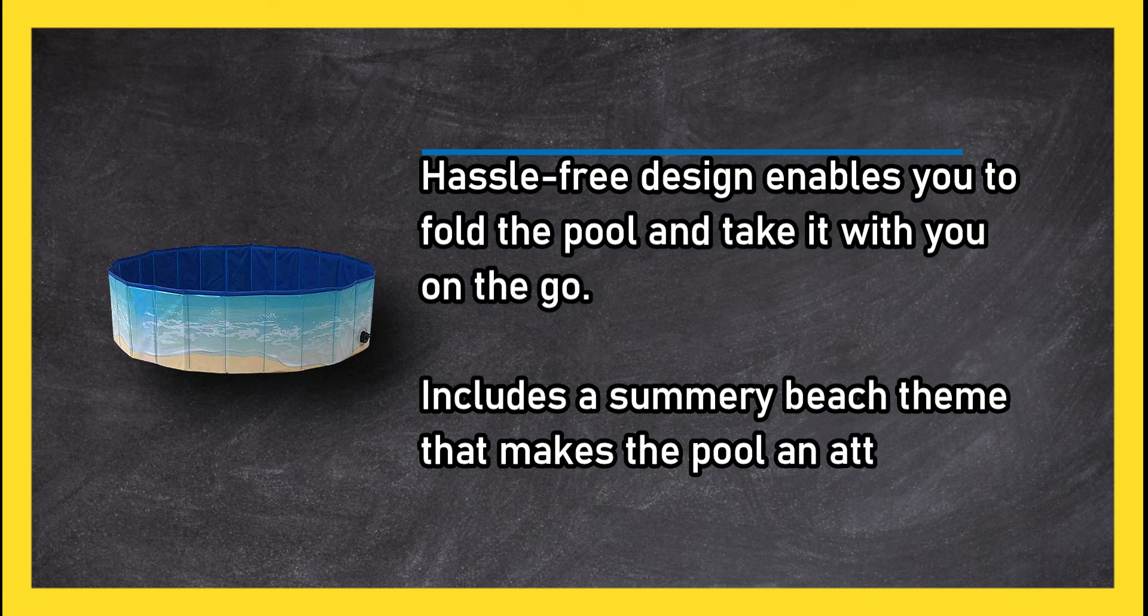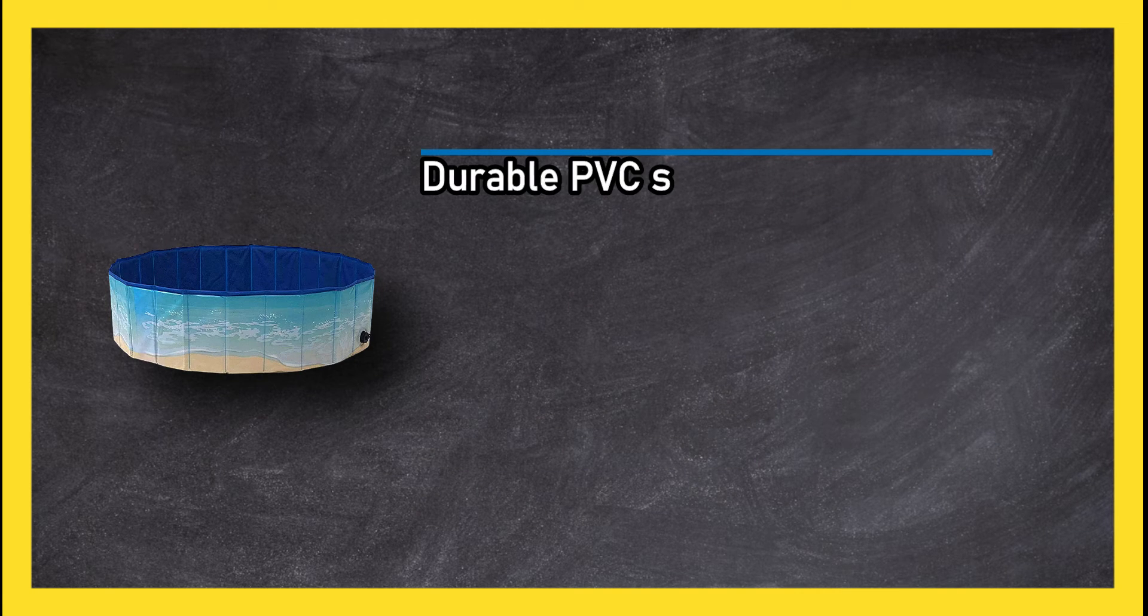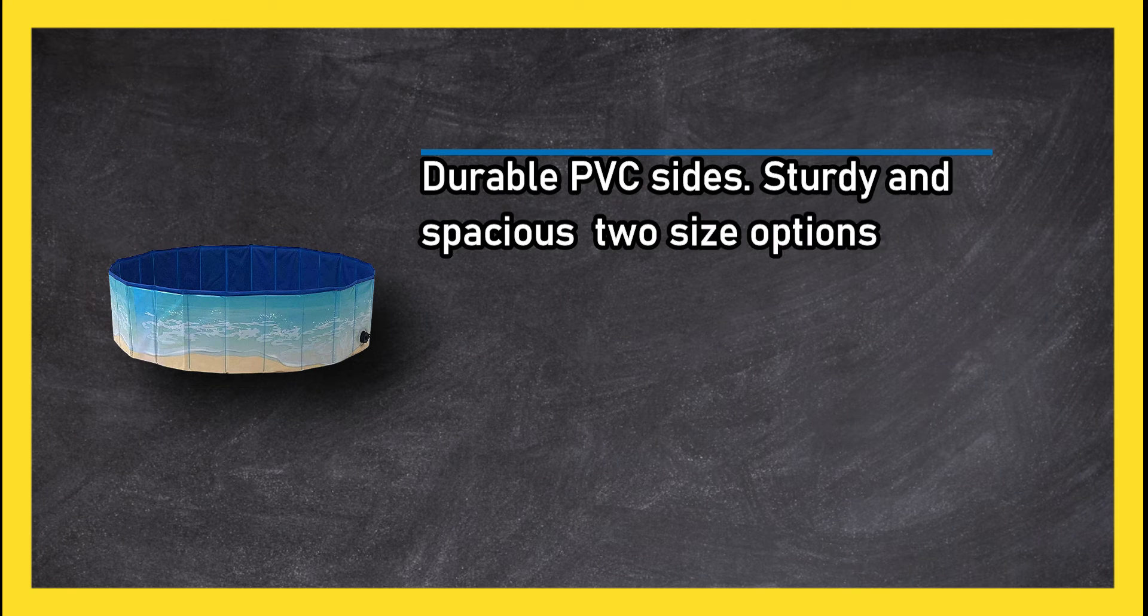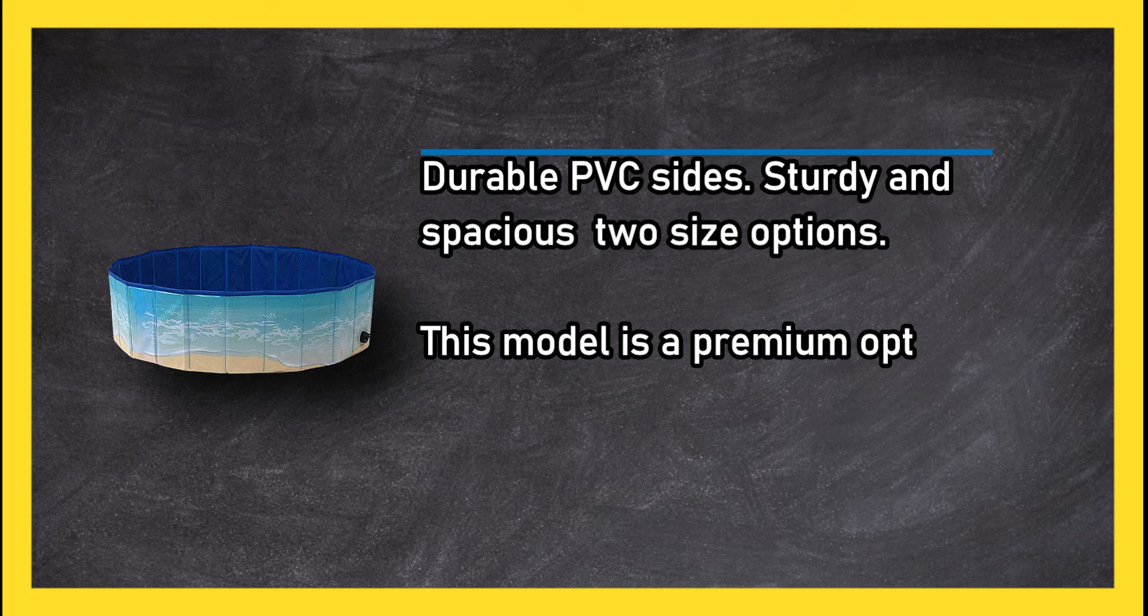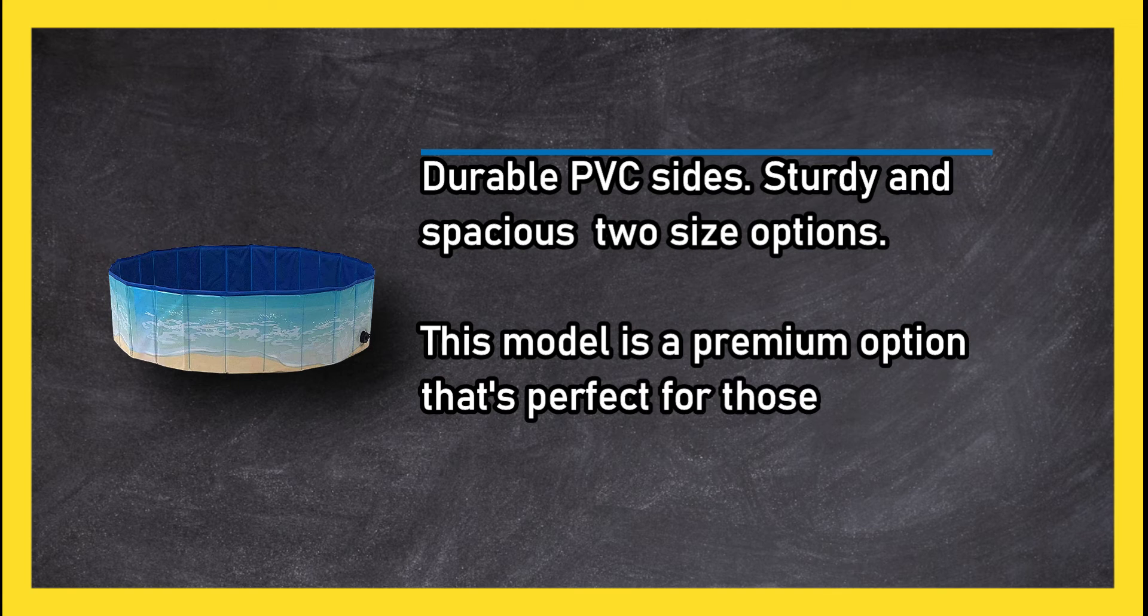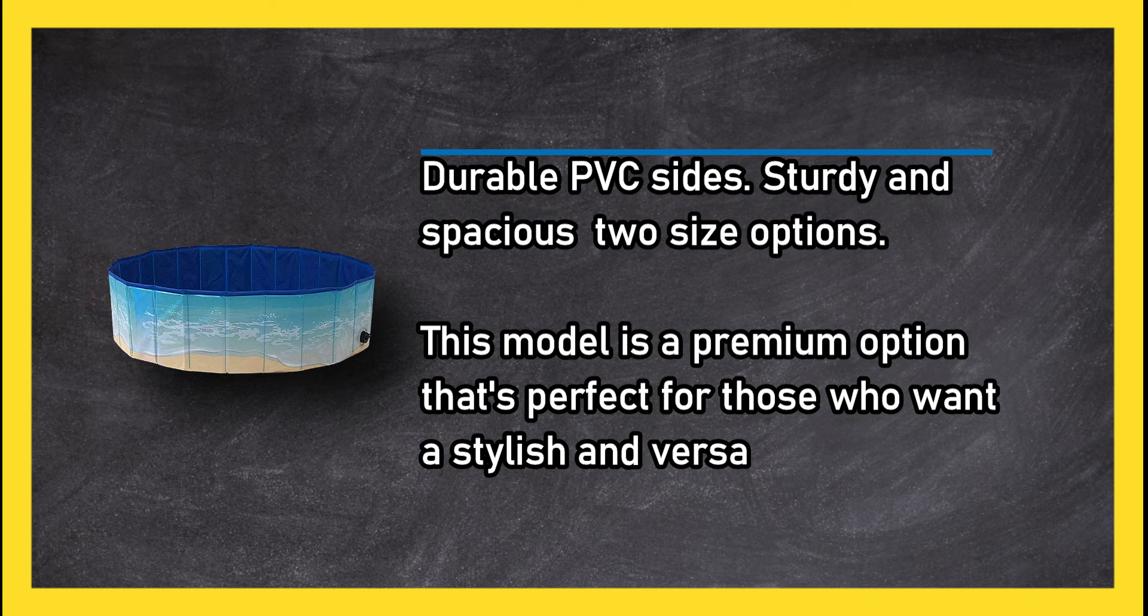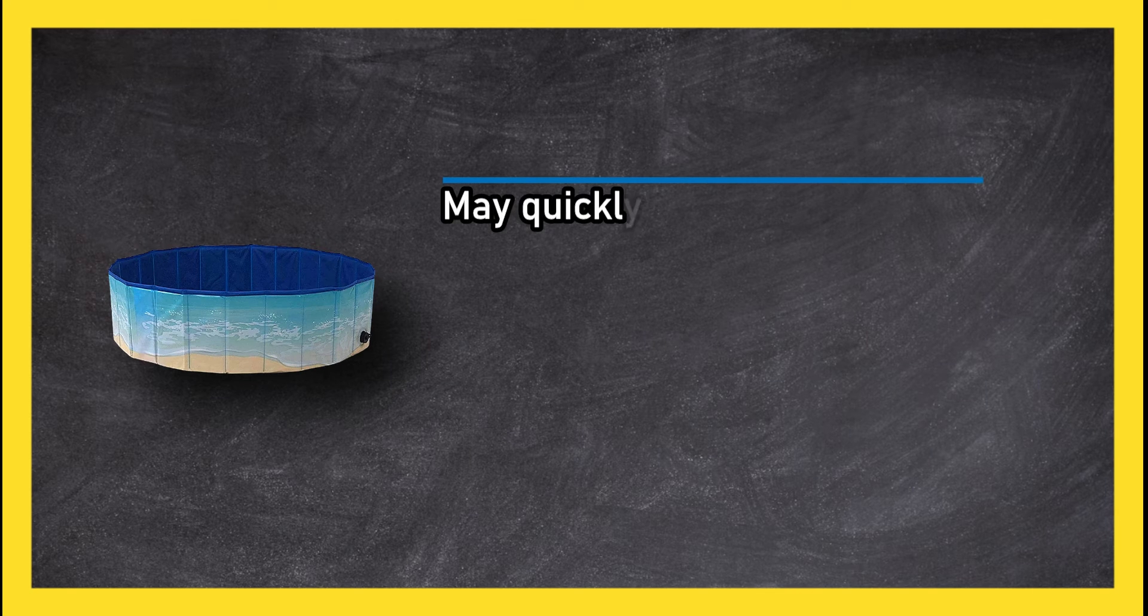Durable PVC sides, sturdy and spacious, with two size options. This model is a premium option perfect for those who want a stylish and versatile dog pool. May quickly develop small leaks that worsen over time. Sidewalls tend to collapse.